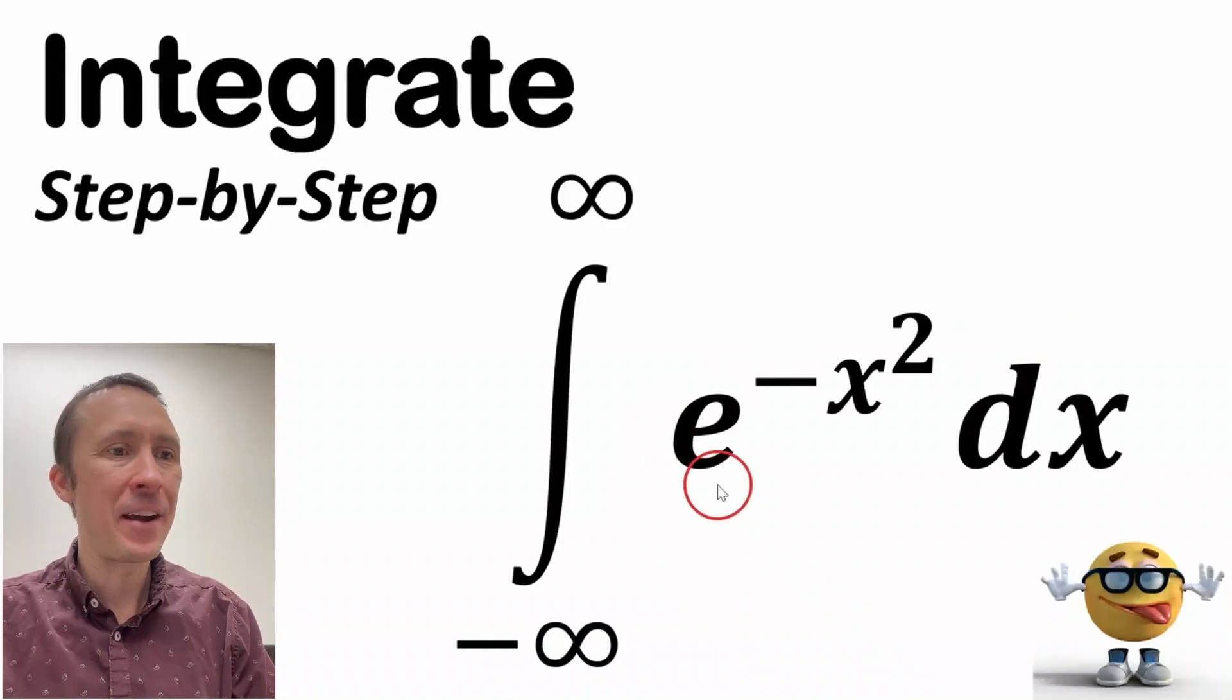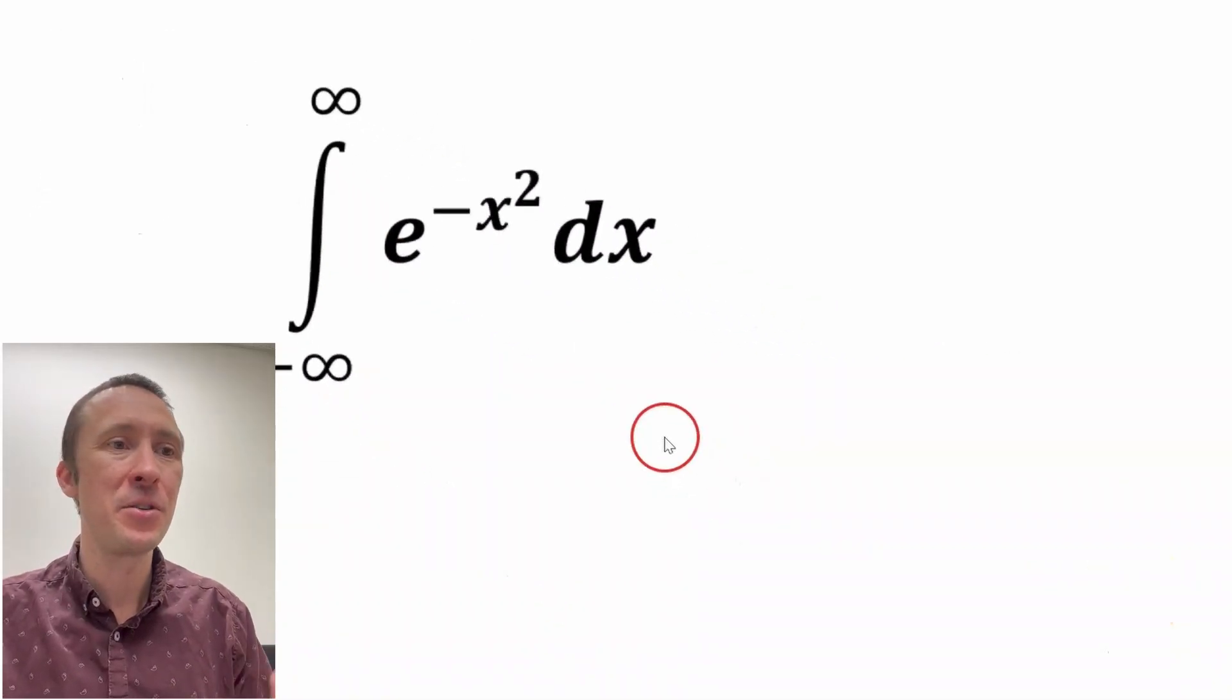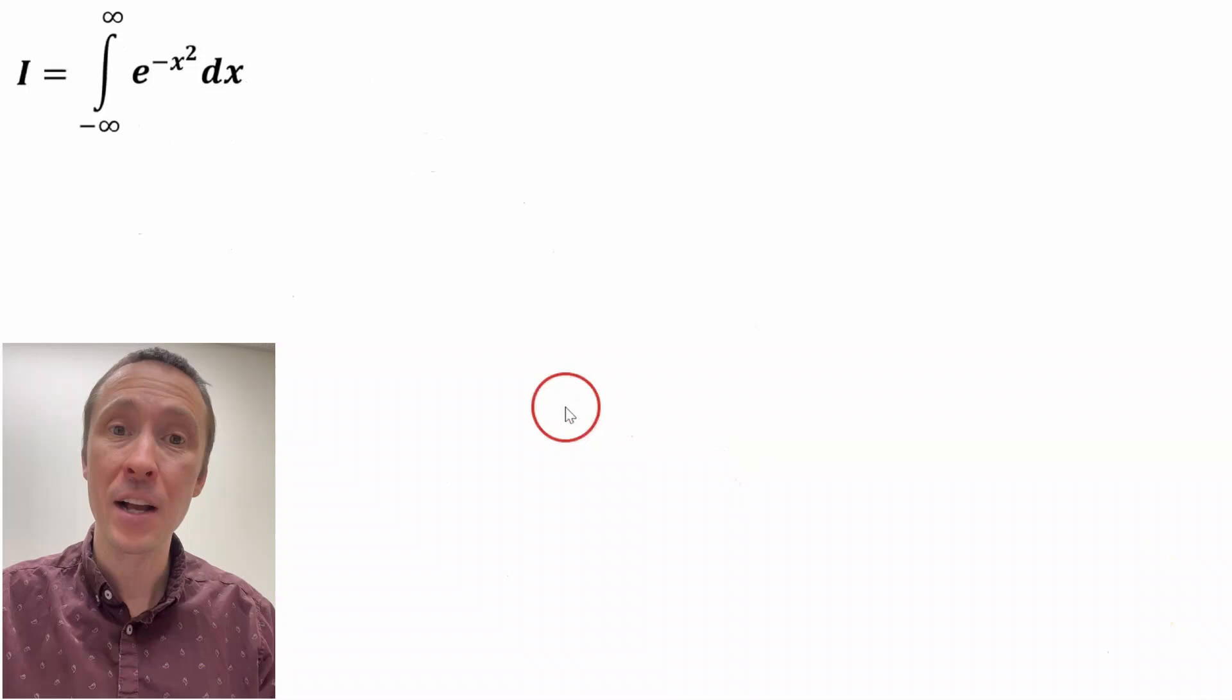What's up y'all, we're going to integrate e to the negative x squared from negative infinity to infinity. This is a Gaussian function and we're going to do this using polar coordinates and it's going to be awesome.